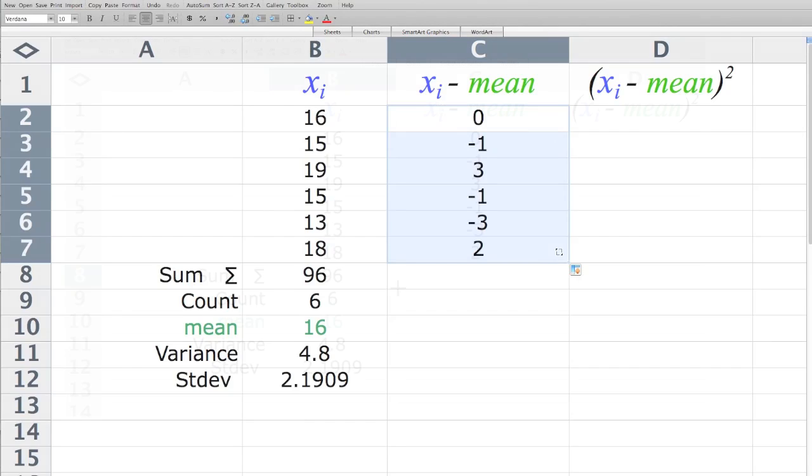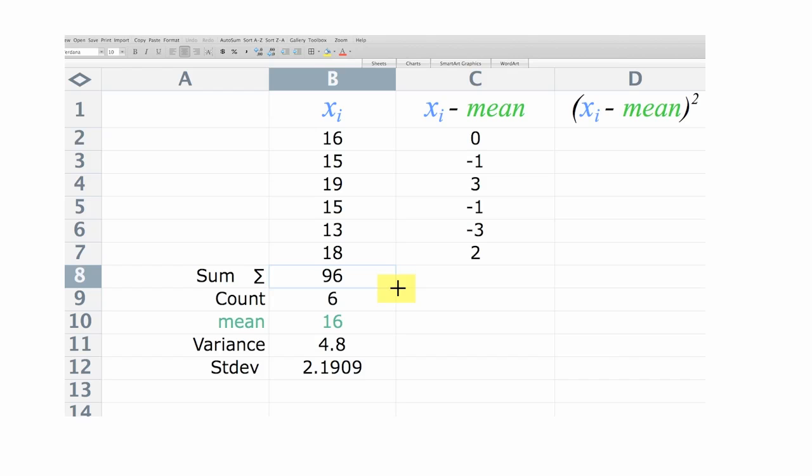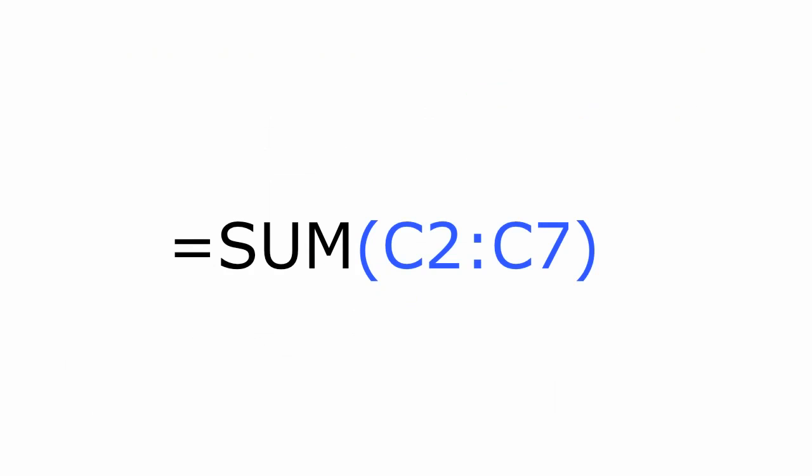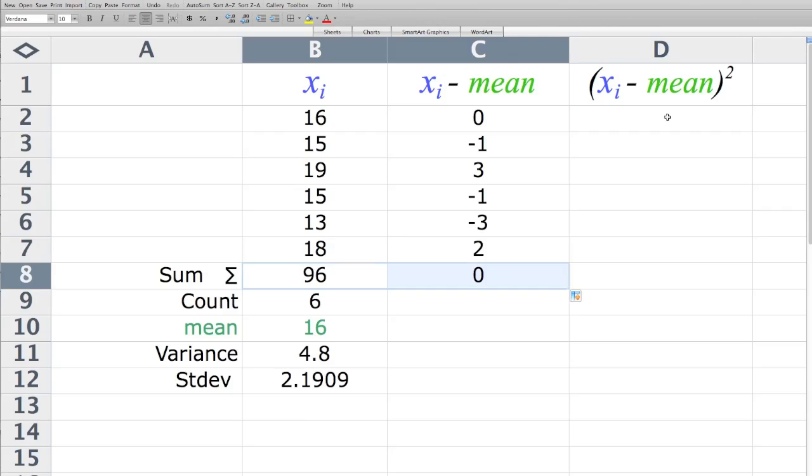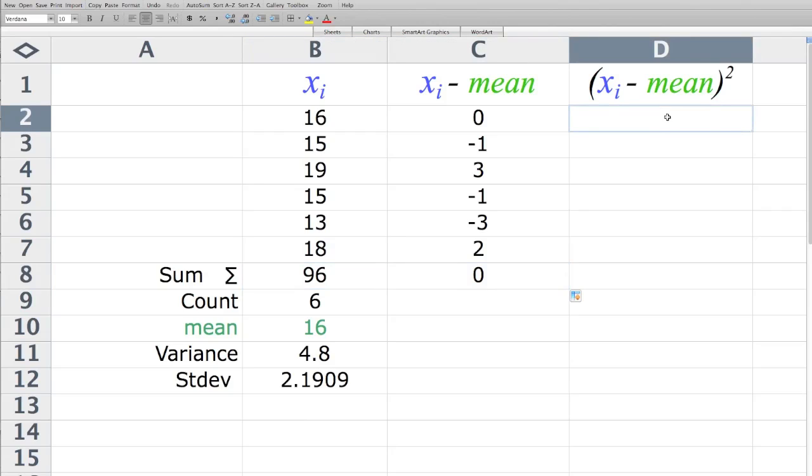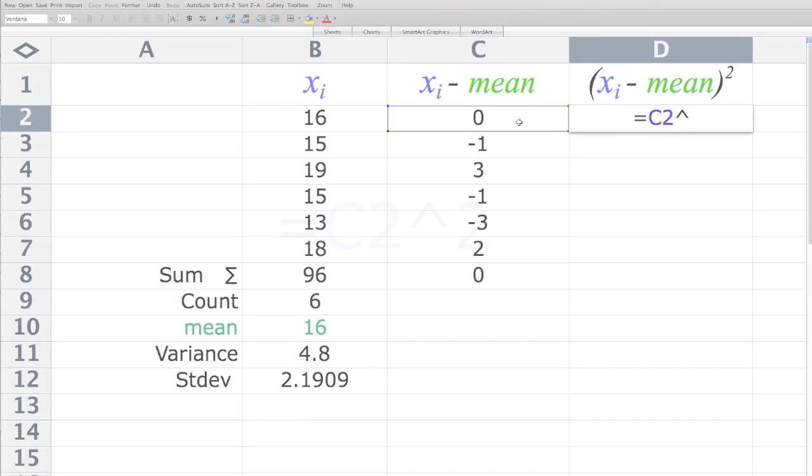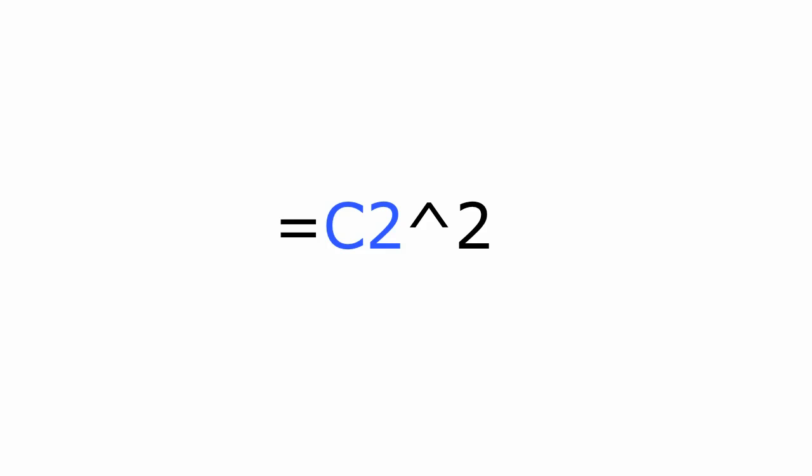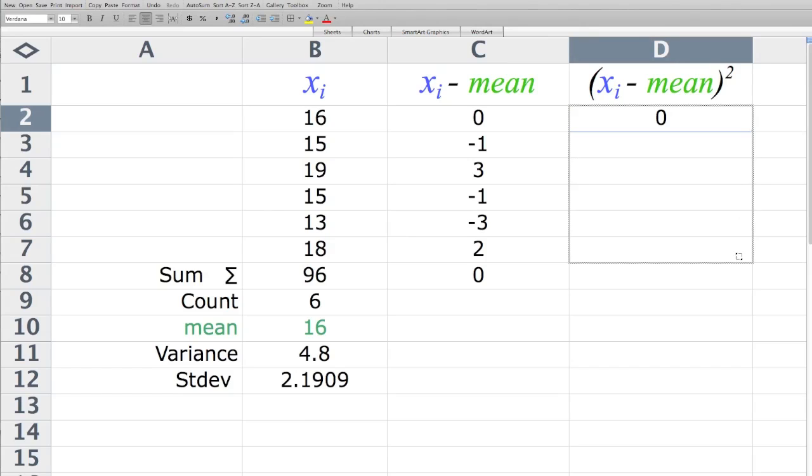I'm going to click on this cell with 96 and drag the sum calculation to the right. This column should always add up to zero. Now I'm going to calculate the values in column D. I hit equal sign and I'm going to square everything in column C. Now I'm going to click on that cell and drag it all down. Copy the formula straight down.